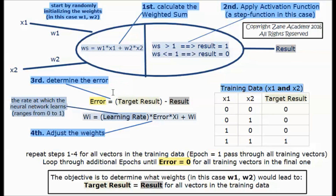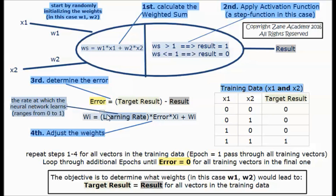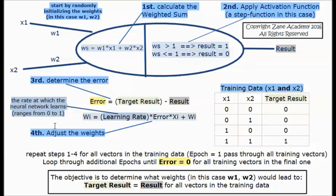Otherwise, if the resulting ws is smaller or equal to 1 then the result is 0. Third, we determine the error: error equals target result minus result. Fourth, we adjust the weights: adjusted w1 equals learning rate times error times x1 plus original w1, and same for w2. The learning rate is the rate at which the neural network learns and ranges from 0 to 1.